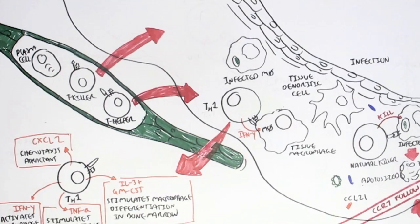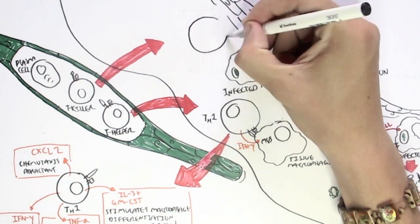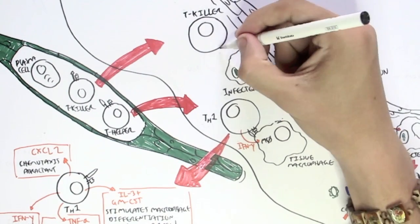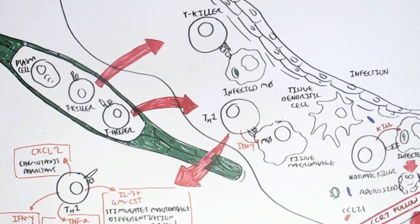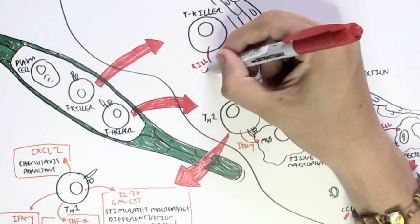Now the T killer cells, their role, as I mentioned earlier, is similar to natural killer cells. They essentially kill infected cells. So in this case, the macrophage is infected, and so the T killer cell will kill it.